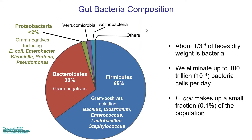The other big group is Firmicutes, which includes a whole bunch of gram-positives: Bacillus, Clostridium, Enterococcus, Lactobacillus, and Staphylococcus. There are a lot of different organisms, and we go through a lot of them every day. Things pass through our digestive system, and we apparently eliminate approximately 100 trillion organisms in one bowel movement, which is really quite an incredible number.